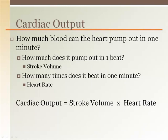Cardiac output is how much blood the heart pumps out in one minute. The amount of blood ejected in a single beat is stroke volume. The number of times the heart beats in a minute is the heart rate. Multiply these two numbers together and you have the cardiac output.